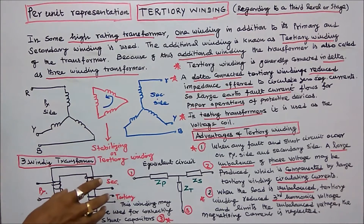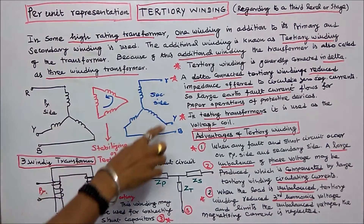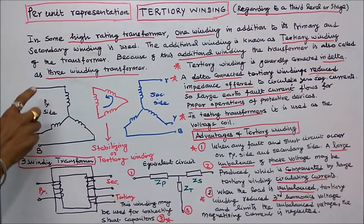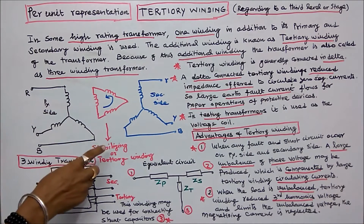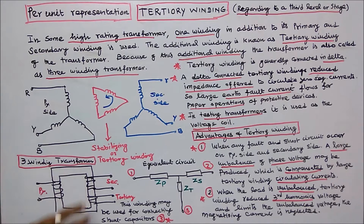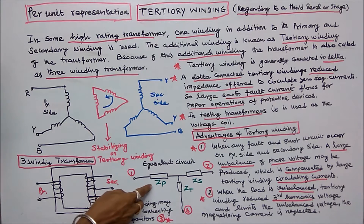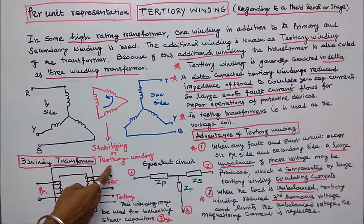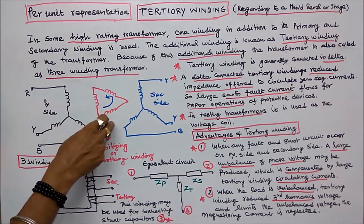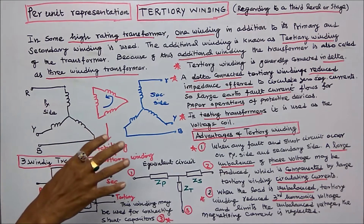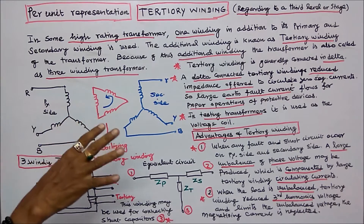In this class we discuss the three winding transformer. This is a figure of a three winding transformer — one is the primary winding, another is the secondary winding, and the third is called the stabilizing or tertiary winding. This is a single phase representation of the primary, secondary, and tertiary windings, along with the equivalent circuit. Tertiary means relating to a third level or stage. In some high rating transformers, one winding in addition to the primary and secondary is used; this additional winding is known as the tertiary winding.